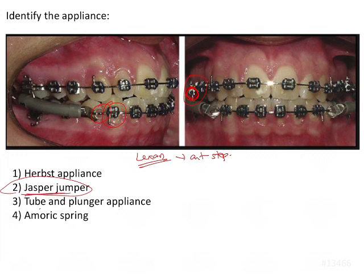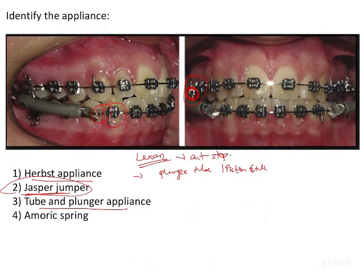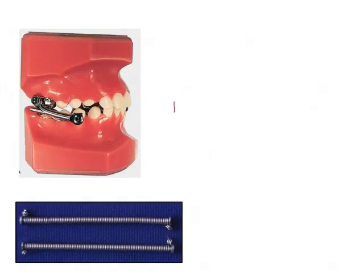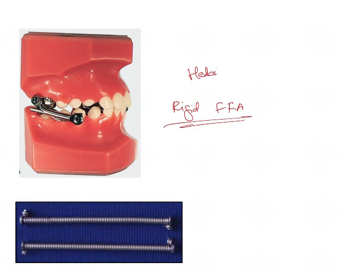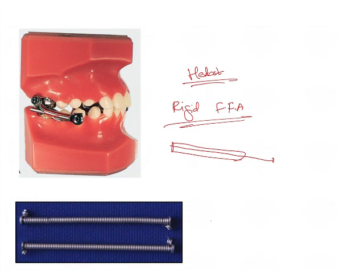Now, how do we differentiate the Jasper Jumper from other appliances in the question — the Herbst, the tube and plunger, and Amoric springs? The tube and plunger appliance is the same as the Herbst appliance, since the Herbst uses a plunger and tube or piston and tube. The Herbst is a rigid fixed functional appliance — unlike the Jasper Jumper, it has no coil springs and therefore does not require plastic covering. It consists of solid metal tubes into which the plunger is inserted, and so it is also called the tube and plunger or piston and tube appliance.